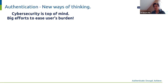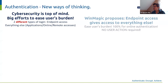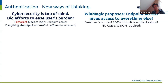We would like to distinguish between two types of login: login to the endpoint and to everything else. With this differentiation, we can propose that endpoint access gives access to everything else, meaning it will ease users' burden big time — 100% of online authentication with no user action required. When we declare best possible user experience, it's because we believe the solution can be the best possible: no user action.